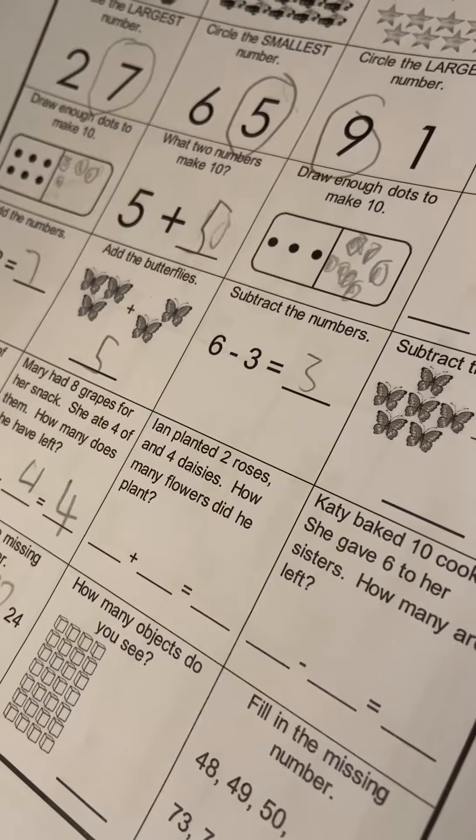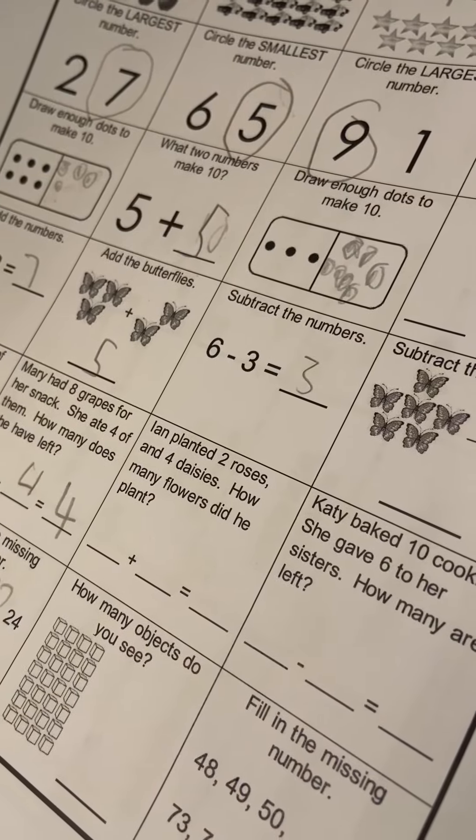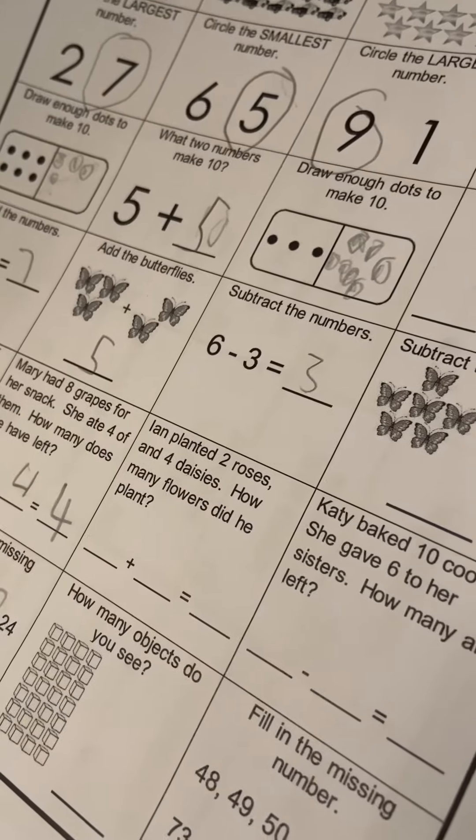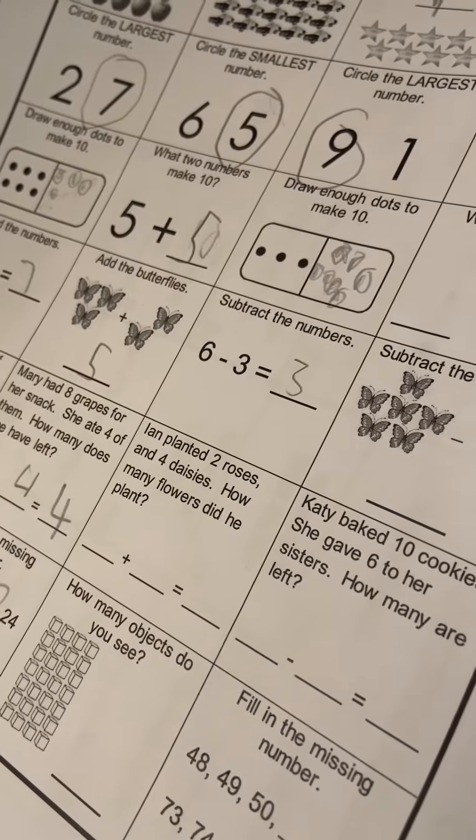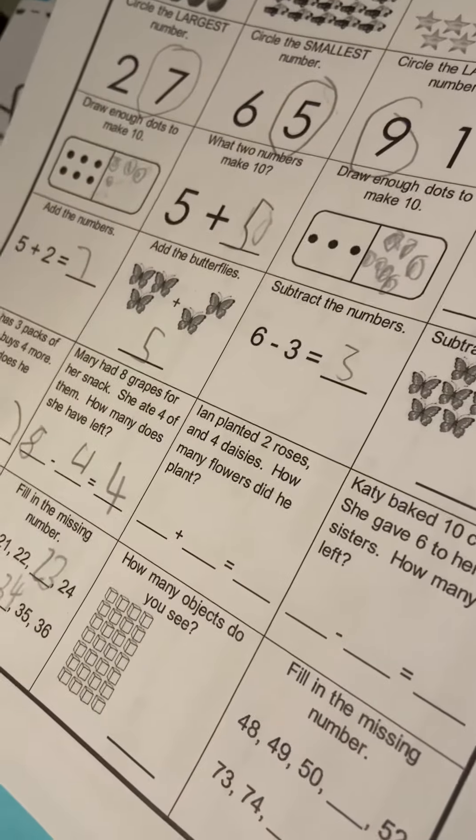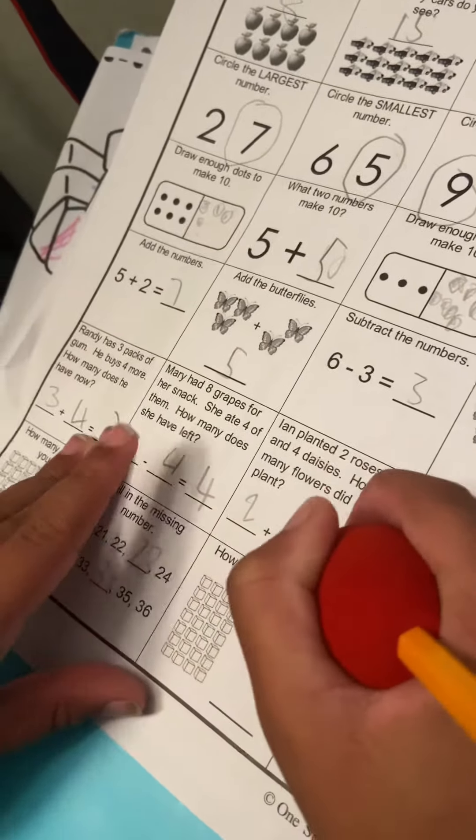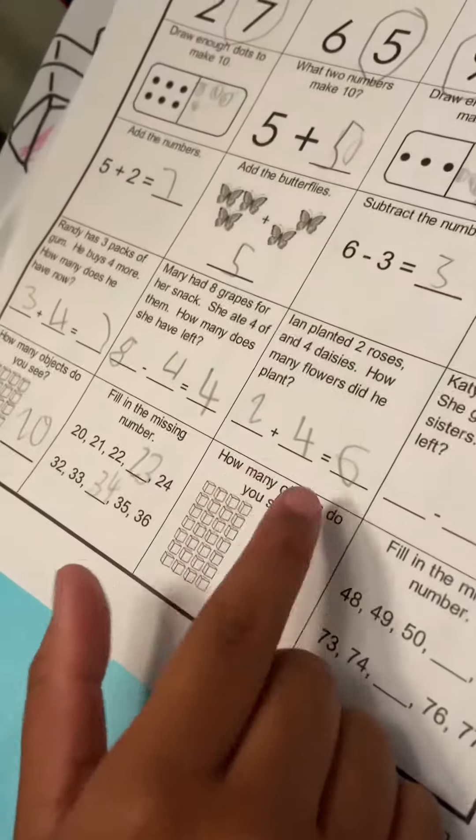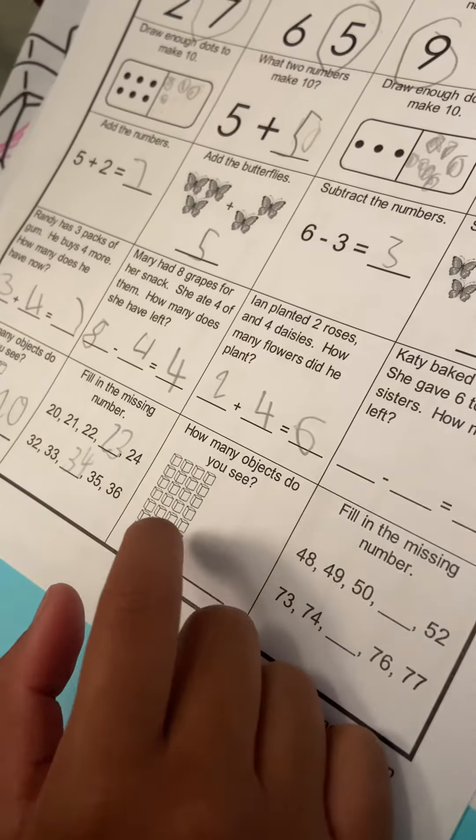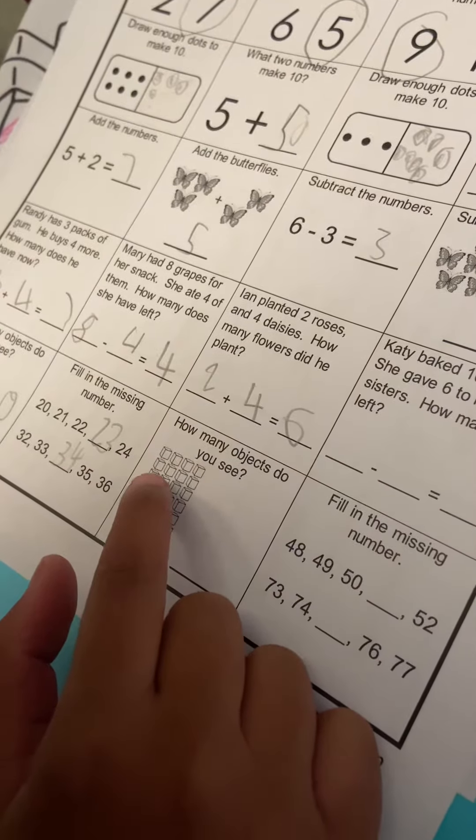How many flowers did he plant? Two plus four. It's easy, six. One, two, three, four. One, two, three, four, five, six.